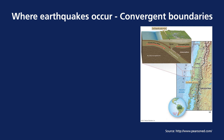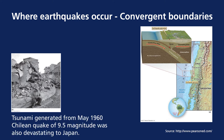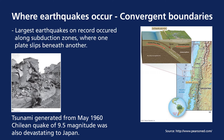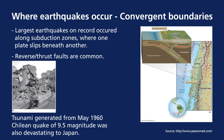Earthquakes also occur at convergent boundaries. You can see this in figure 5-4a, where an oceanic plate is subducting beneath a continental plate. This is specifically where a 9.5 magnitude subduction-caused earthquake occurred in Chile in 1960, which also traveled across the Pacific Ocean to Japan where it caused a massive tsunami. The largest earthquakes on record have occurred along these subduction zones as one plate slips beneath another. Reverse thrust faults are also common.